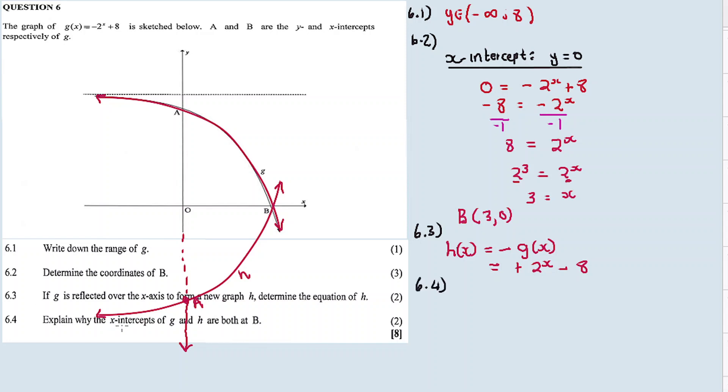So, 6.4. Explain why the X-intercept of G and H are both at B. Because G was reflected about the X-axis. So, that's why they are both at B. And another reason is that Y for this coordinate, the Y value for this coordinate, the Y coordinate is 0 for both. Therefore, Y is 0 for both G and H. It means the same value of X will be obtained for G and H. So, that's why the X-intercepts for G and H are both the same.